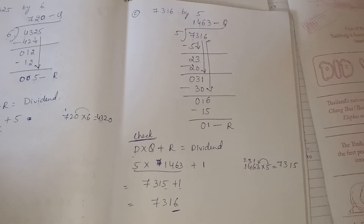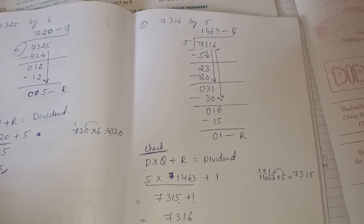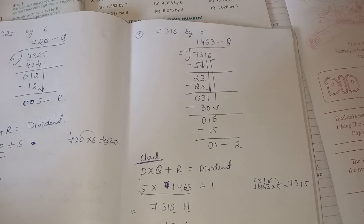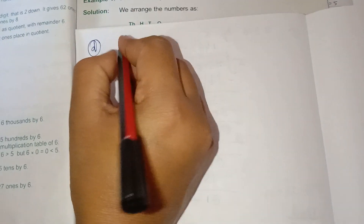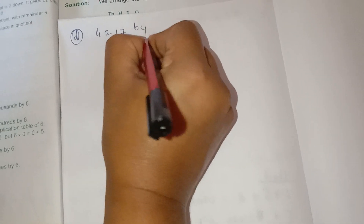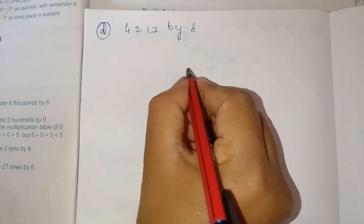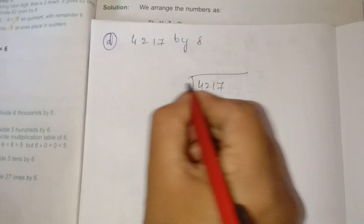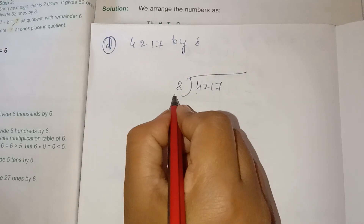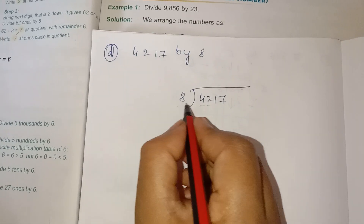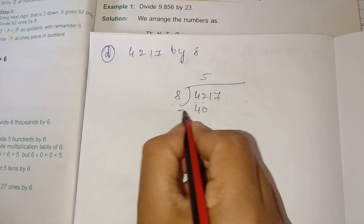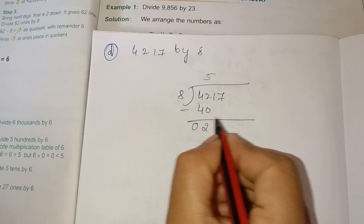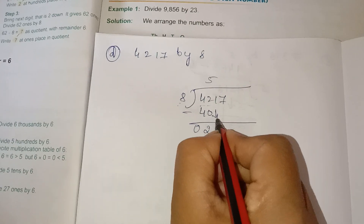This is how we completed the third one. Next, move on to the fourth one: 4217 divided by 8. Write it down. 4 is less than 8, so we take 2 digits. 8 fives are 40. Take 1 number down.